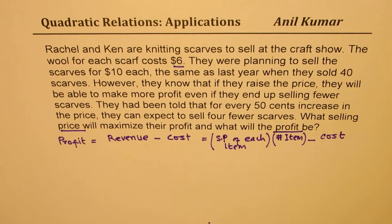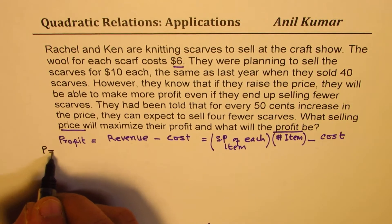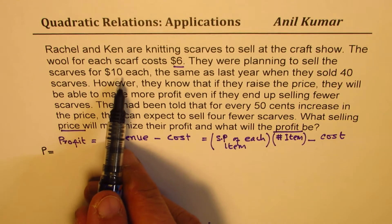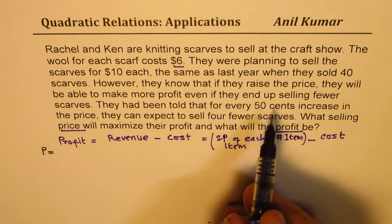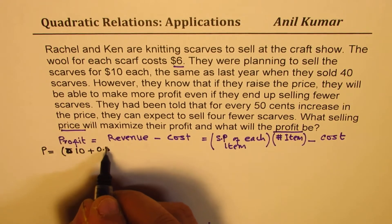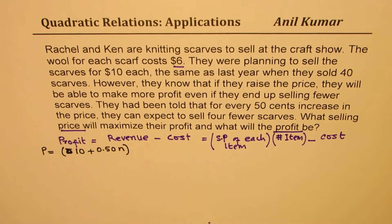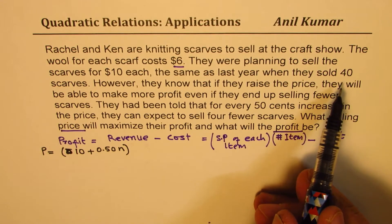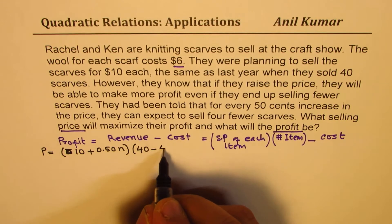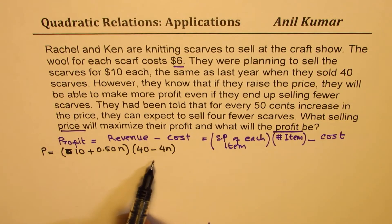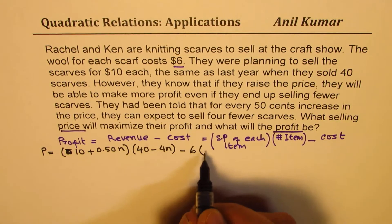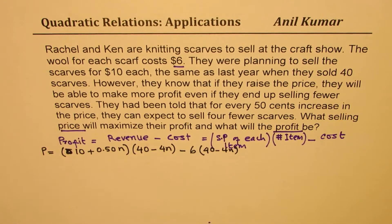Let's write down our equation for profit. Let P represent profit. The original selling price was $10 and they want to increase it by $0.50 increments, so let n be the number of $0.50 increases. The new selling price becomes $10 + 0.50n. At this new price, they will sell fewer scarves — earlier they sold 40, so the number sold becomes 40 minus 4n. The cost is $6 per item times (40 minus 4n) items sold.